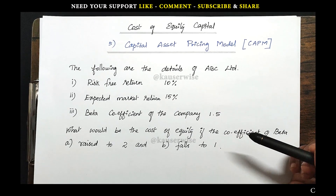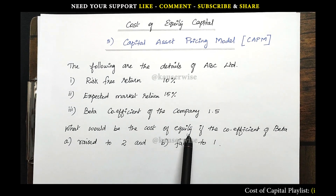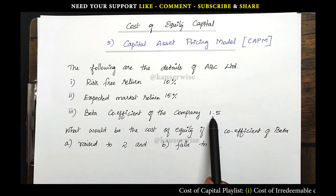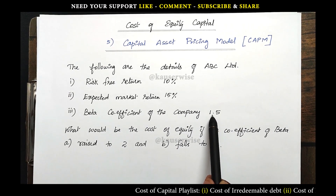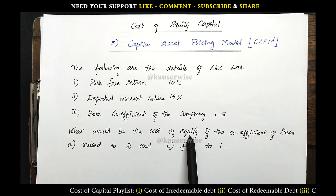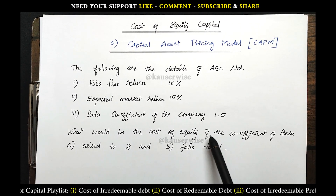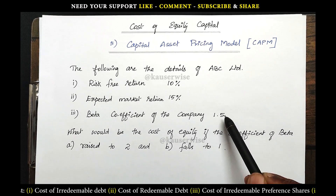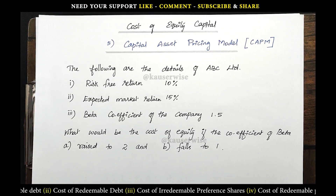They are asking you to find out what would be the cost of equity if the beta value is raised from 1.5 to 2. And the second scenario is if the beta value falls to 1, from 1.5 to 1, what will be the cost of equity?